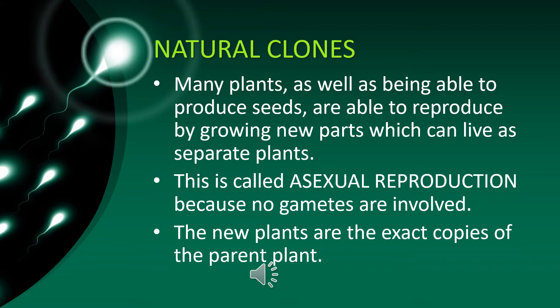First we will describe natural clones. Many plants, as well as being able to produce seeds, are able to reproduce by growing new parts which can live as separate plants. This is called asexual reproduction because no gametes are involved. The new plants are exact copies of the parent plant.